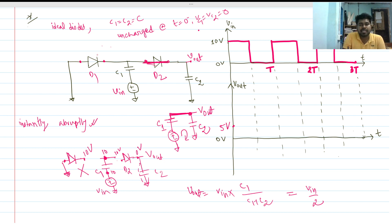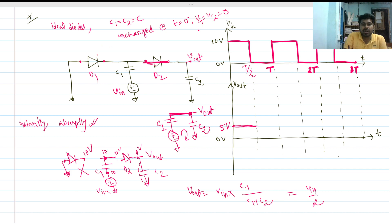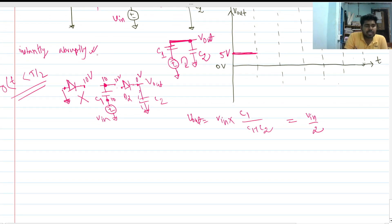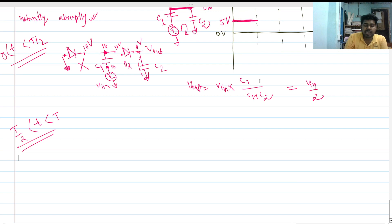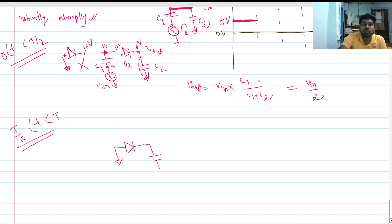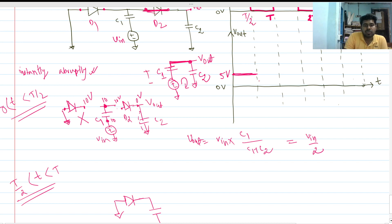Since the charging is instantaneous, at t between zero and T/2, Vout immediately reaches 5 volts. Now at t equals T/2 to T, the input voltage goes to zero volts. We again do the open circuit test. At this condition, since C1 equals C2, VC1 will be the same as VC2, which is Vout — nothing but V-invite divided by 2.